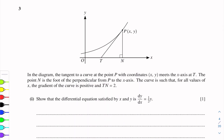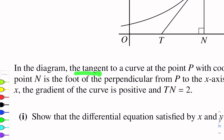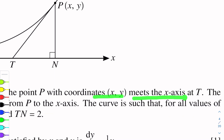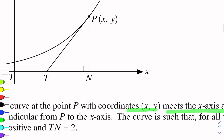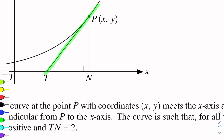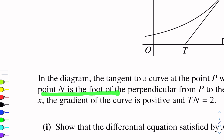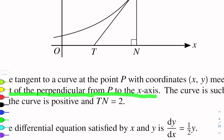Question No. 3. In the diagram, the tangent to the curve at point P with coordinates (x, y) meets the x-axis at T. This line is the tangent at point P. This is the curve. This tangent meets the x-axis at point T. The point N is the foot of perpendicular from P to the x-axis.